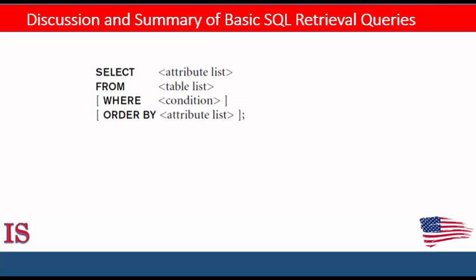A simple retrieval query in SQL can consist of up to four clauses, but only the first two — SELECT and FROM — are mandatory. The clauses are specified in the order indicated, with optional clauses shown in square brackets. The SELECT clause lists the attributes to be retrieved, the FROM clause specifies all the tables needed, the WHERE clause identifies conditions for selecting tuples including join operations, and ORDER BY specifies an order for displaying query results. Two additional clauses, GROUP BY and HAVING, will be described later.